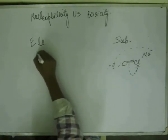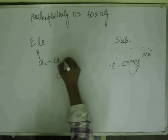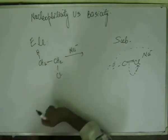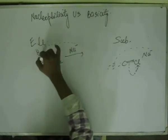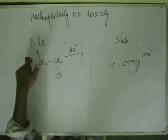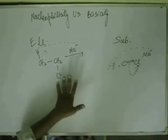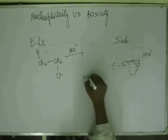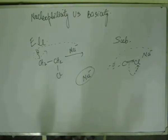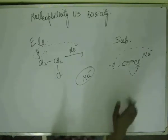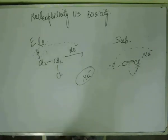Let's see once again what happens in elimination. In elimination, we have a nucleophile. This nucleophile will break the carbon-hydrogen bond, and breaking this carbon-hydrogen bond is much easier for the nucleophile than breaking the carbon-chlorine bond. So if the nucleophile is highly unreactive — meaning it does not have much time to sustain itself in the system and must react within picoseconds or nanoseconds — then it will take the fastest path. The substitution path is slow; the elimination path is fast.